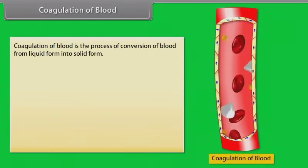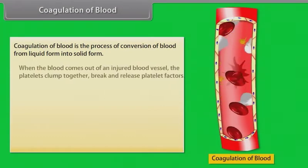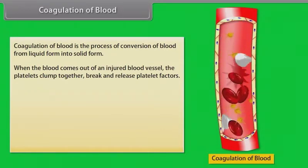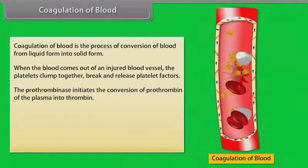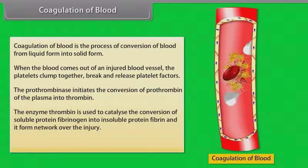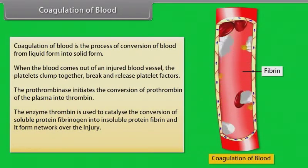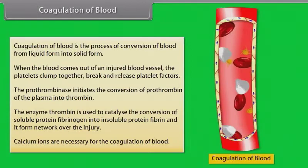Coagulation of blood is the process of conversion of blood from liquid form into solid form. When blood comes out of an injured blood vessel, the platelets clump together, break, and release platelet factors. Prothrombinase initiates the conversion of prothrombin in the plasma into thrombin. The enzyme thrombin catalyzes the conversion of soluble protein fibrinogen into insoluble protein fibrin, forming a network over the injury. Calcium ions are necessary for the coagulation of blood.